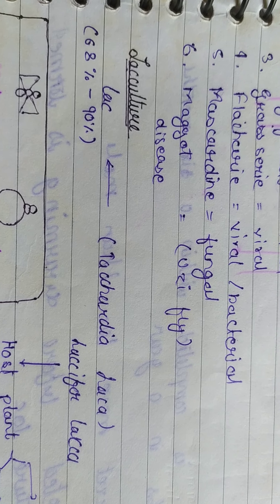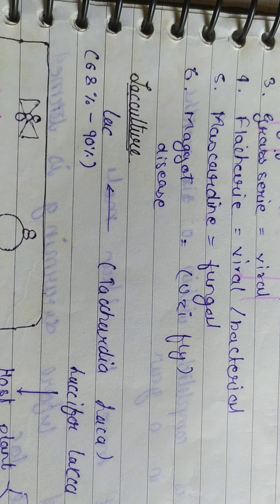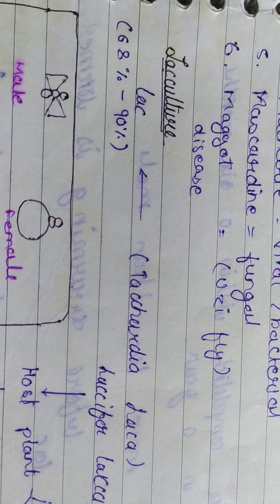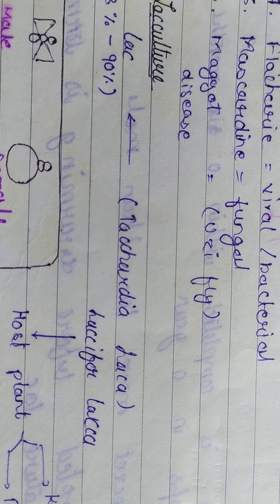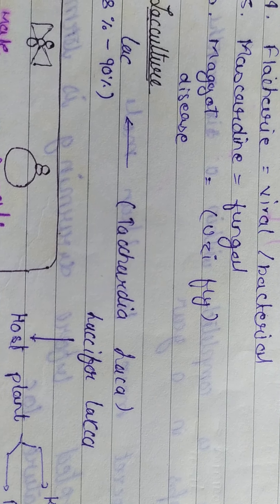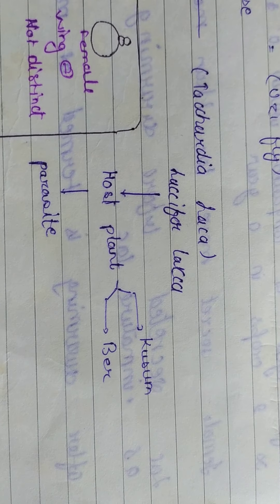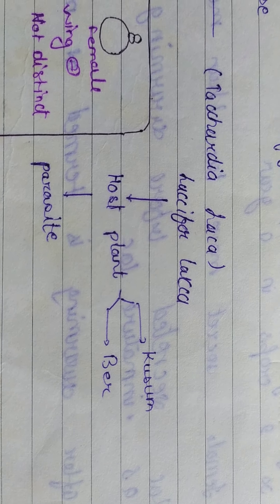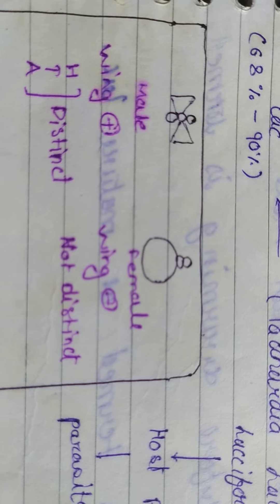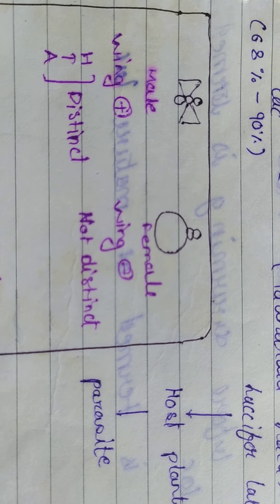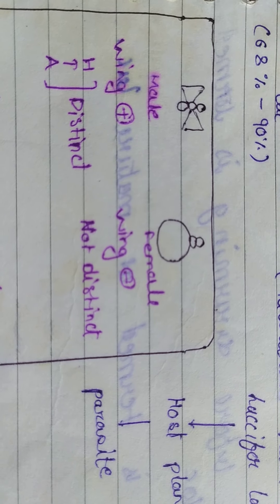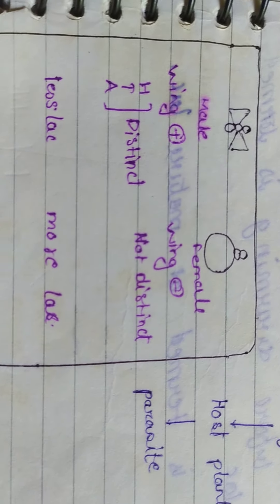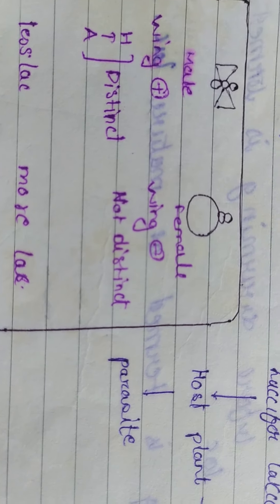Lac culture involves production of lac from lac insects. Lac contains 68-90% resin. Host plants include Kusum, Ber, Peepal, and Paras. The lac insect is a parasite with distinct male and female forms. The female lacks wings, which is a distinguishing characteristic, while the male is winged.